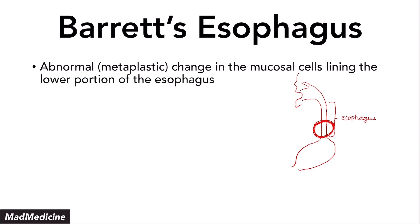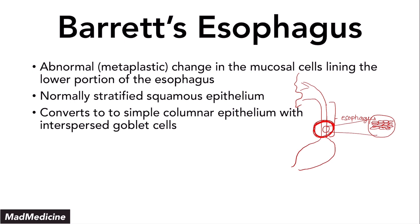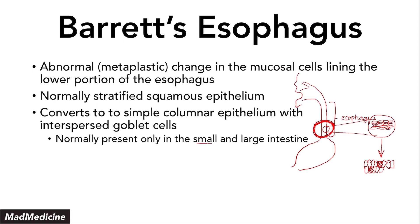Normally, the esophagus has a stratified squamous cell type — this is the normal cell structure. In Barrett's esophagus, the stratified squamous structure is going to convert to simple columnar epithelium, going from stratified squamous to simple columnar, with goblet cells interspersed. This type of epithelium — simple columnar — is present in your digestive system, but not in the esophagus. It's actually present in your small and large intestines.